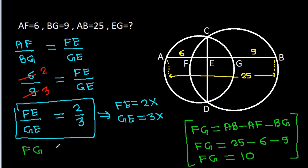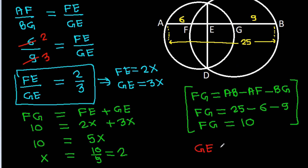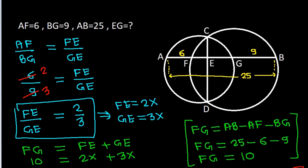And FG equals FE plus GE, so 10 equals 2x plus 3x, meaning 10 equals 5x, and x equals 10 by 5, which is 2. Therefore GE equals 3x, which is 3 times 2, and it is 6. So EG is 6.